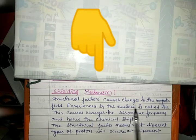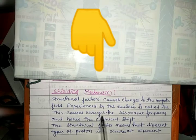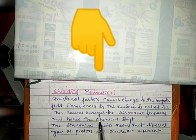Let us start today's discussion. First, we discuss shielding mechanism of NMR spectroscopy. A structural factor causes change in magnetic field experienced by the nucleus, is called shielding mechanism. This causes change in resonance frequency and hence the chemical shift.